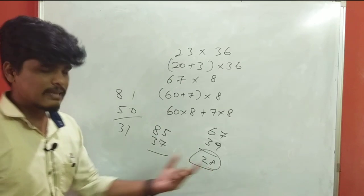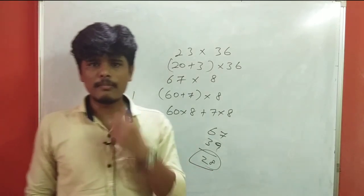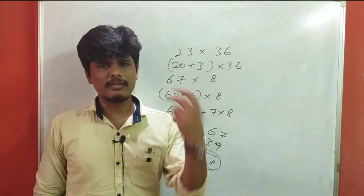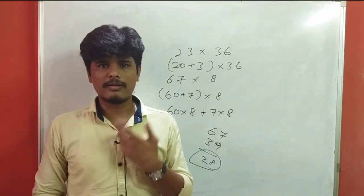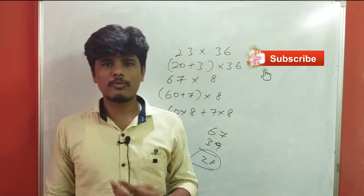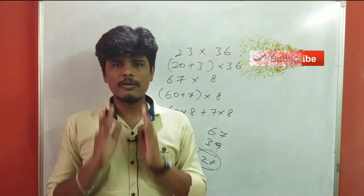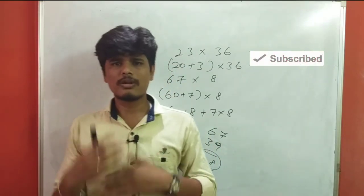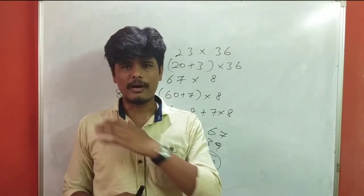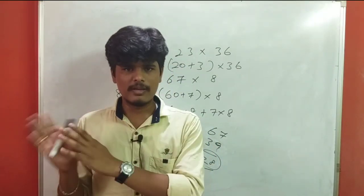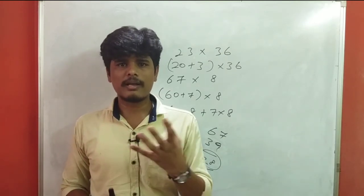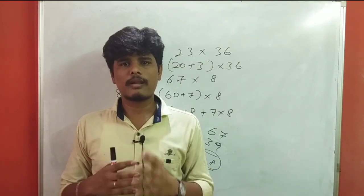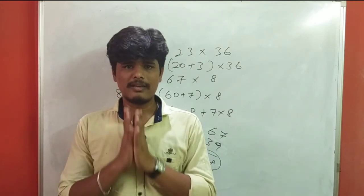If you do this in your mind, you will be able to do it faster. First thing: improve the basic calculation. If you do it, you will have enough time. You are doing simplification, approximation, and finding the multiplication. If you have multiplication problems, it will be easy to do all this. This is the first tip.